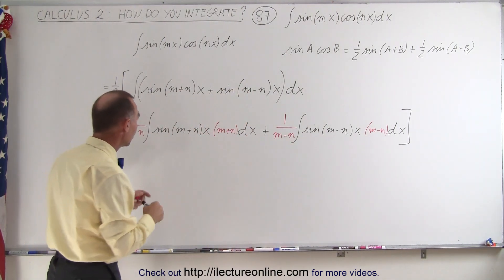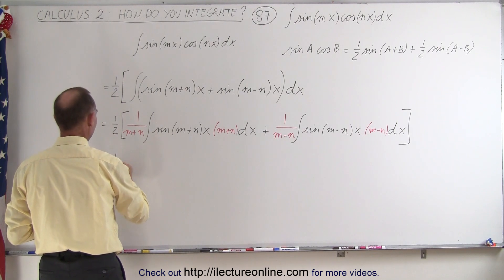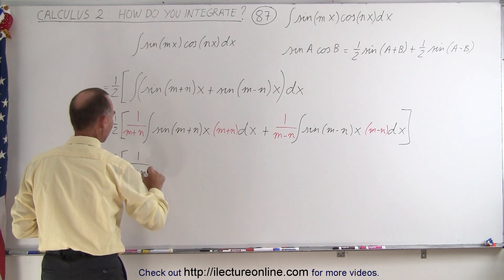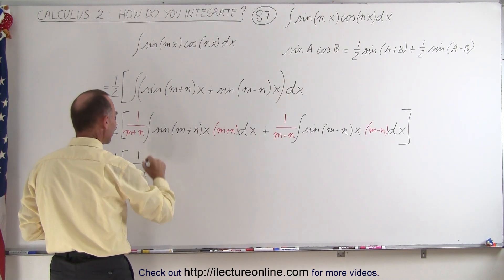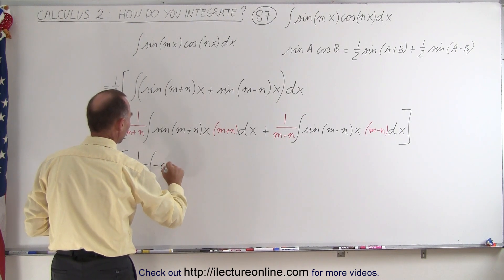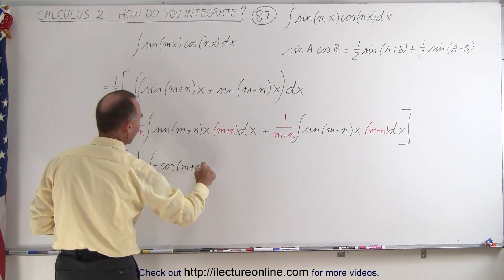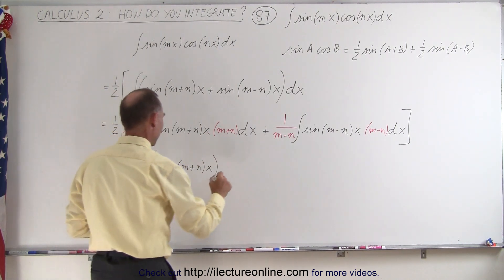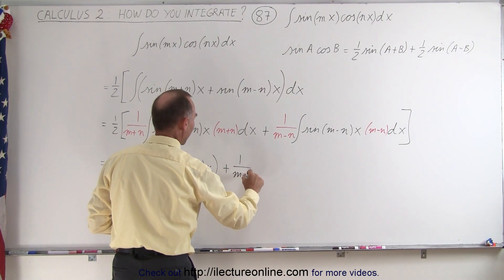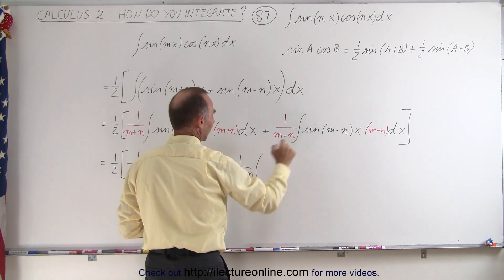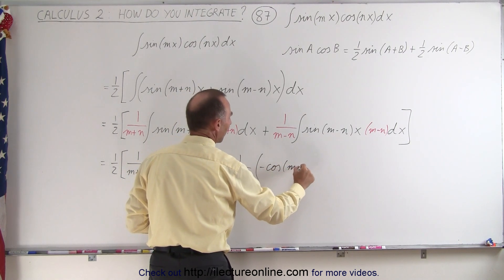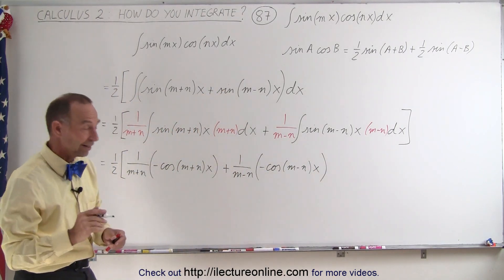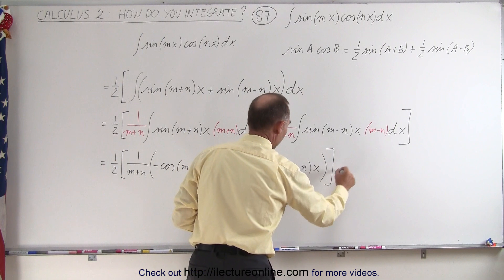Now I'm ready to integrate these two. This becomes equal to one half times one over m plus n, and the integral of the sine is going to be the negative cosine, so that's times the negative cosine of m plus n times x. And then notice when I integrate that, I have plus one over m minus n times the negative cosine of m minus n times x. And then of course I still have the constant of integration, so plus c.